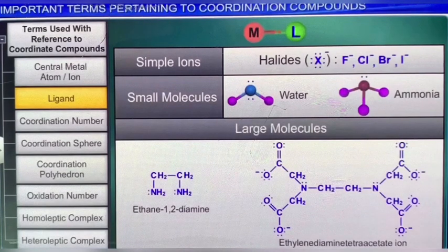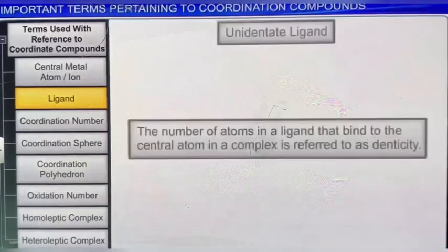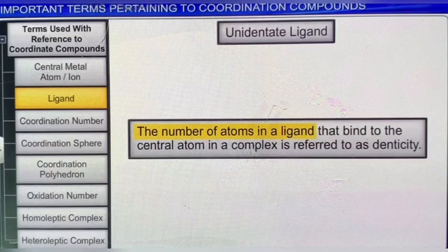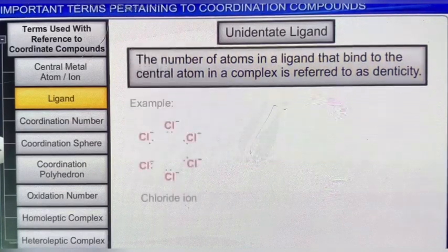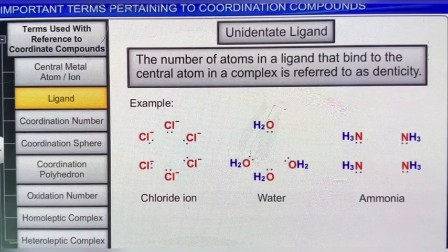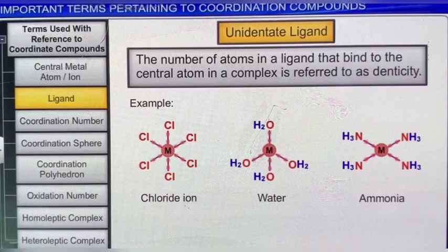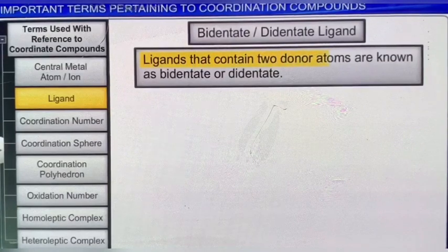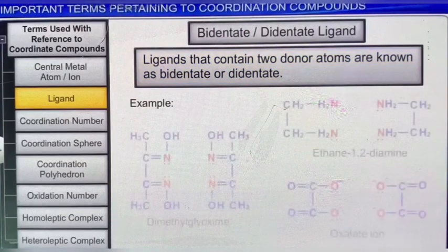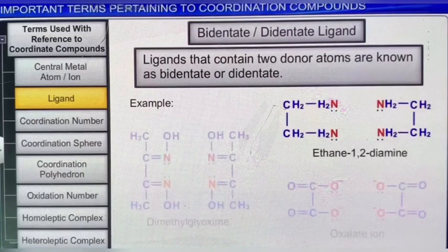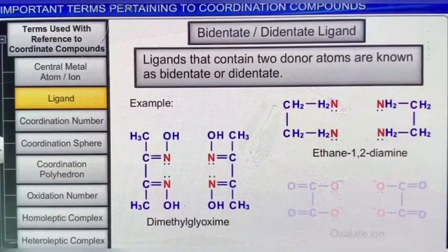The number of atoms in a ligand that bind to the central atom in a complex is referred to as denticity. When a ligand is bound to a metal ion through a single donor atom, as with a chloride ion, a water molecule, or an ammonia molecule, the ligand is said to be unidentate. Ligands that contain two donor atoms are known as bidentate or didentate. Common examples of didentate ligands are ethane-1,2-diamine, dimethylglyoxime, and oxalate ion. These ligands have two donor atoms that can simultaneously bind to the central metal atom.